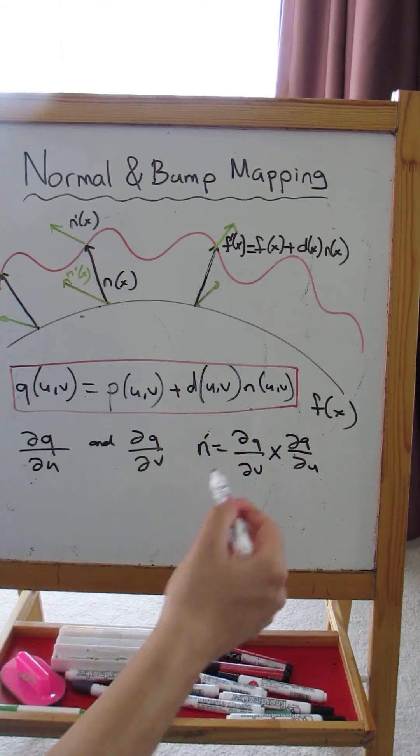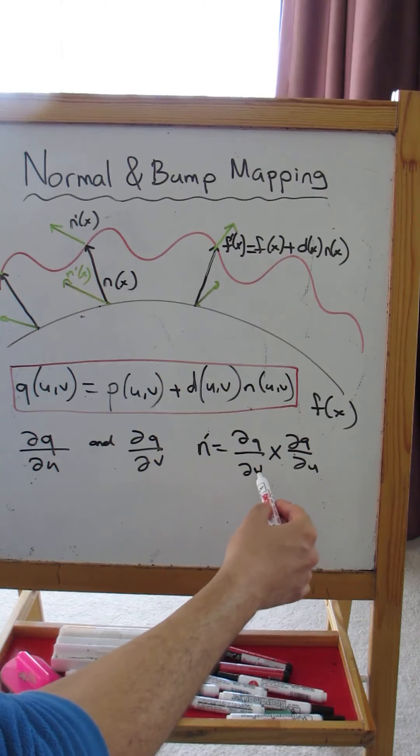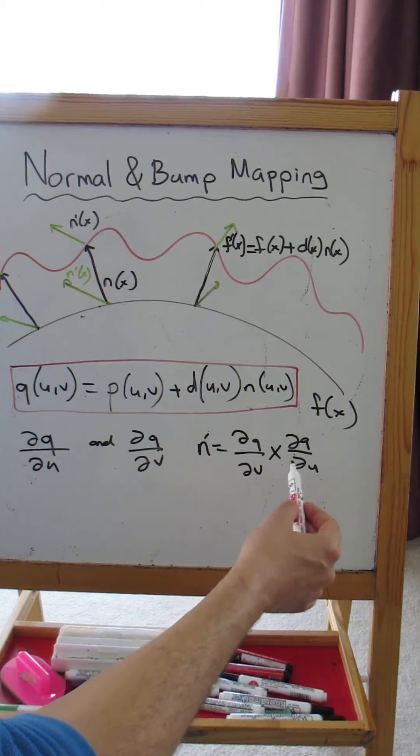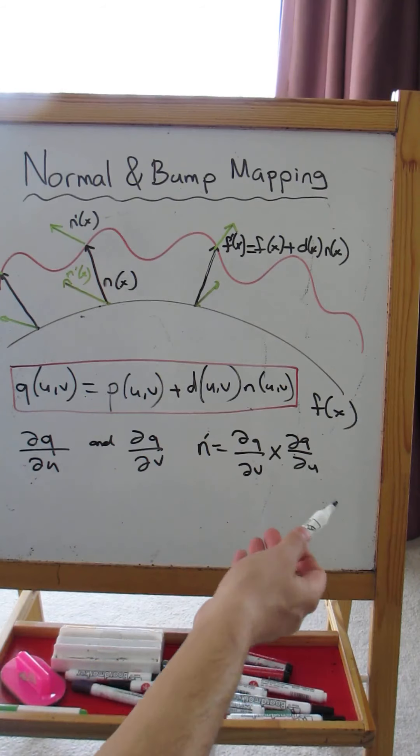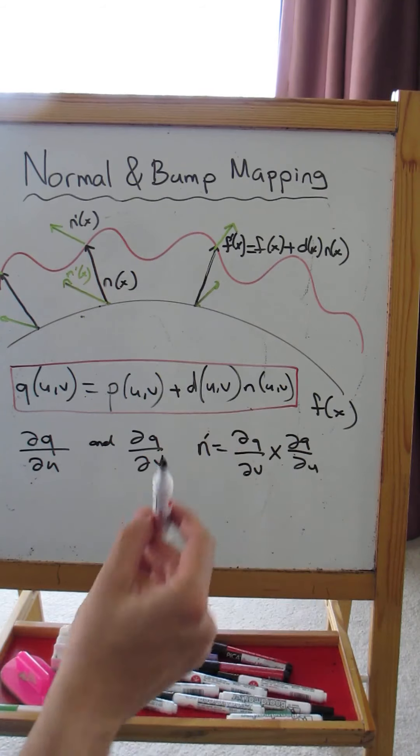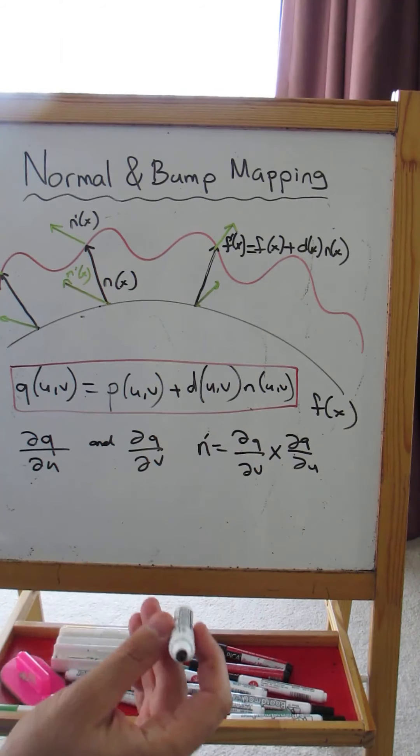So how do I know the order of the cross product? Is it important? Well, the order of the cross product is important. If you do it in the wrong order, your normal will start to point in the opposite direction.